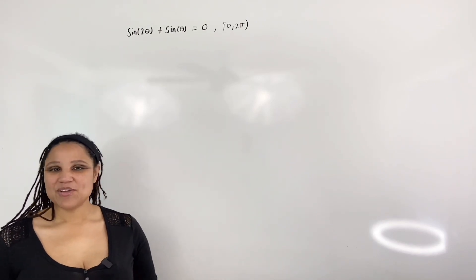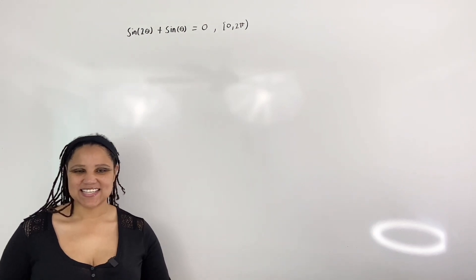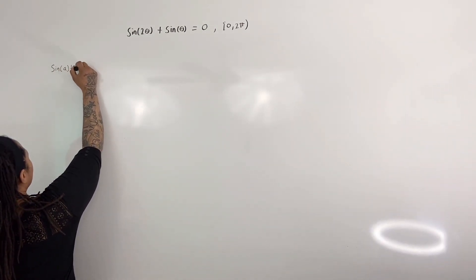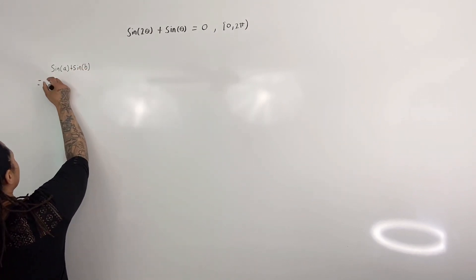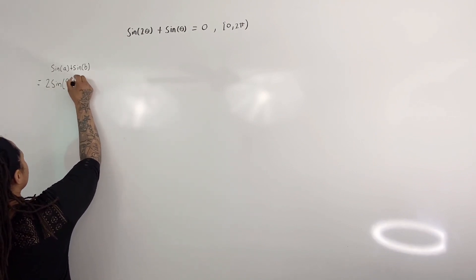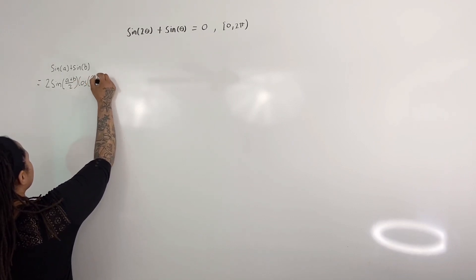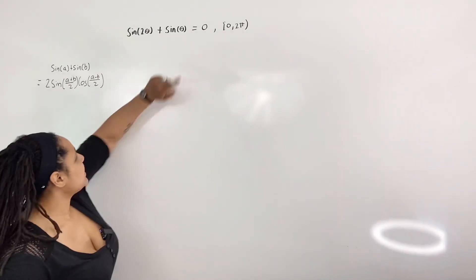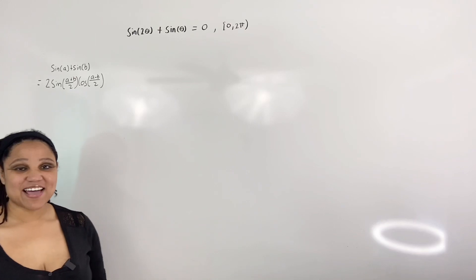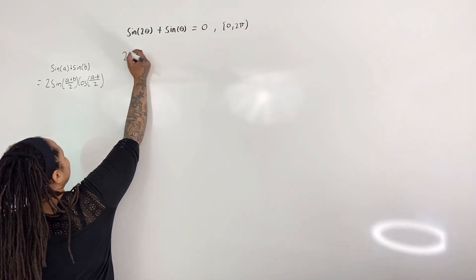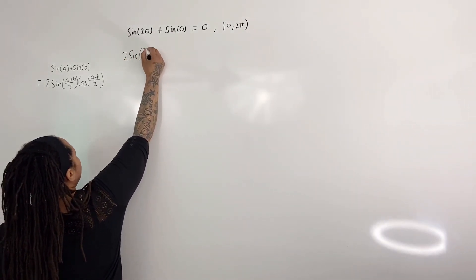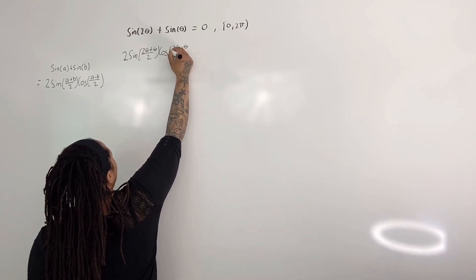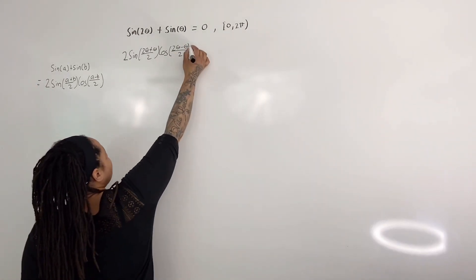We begin with what we already know. Recall one of our sum-to-product identities: sine of a plus sine of b is equal to 2 sine of (a plus b) over 2 times cosine of (a minus b) over 2. So if I let 2 theta be equivalent to a and theta be equivalent to b, we can rewrite the left side of the equation as 2 sine of (2 theta plus theta) over 2 times cosine of (2 theta minus theta) over 2, and we can set that equal to 0.